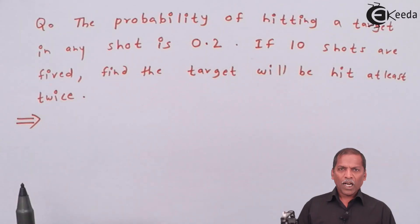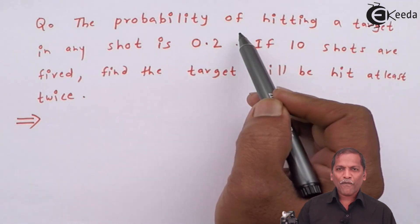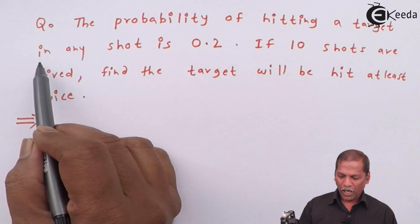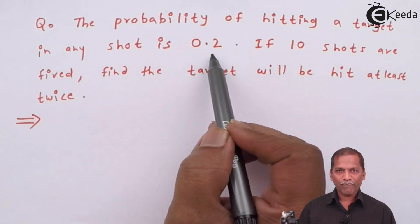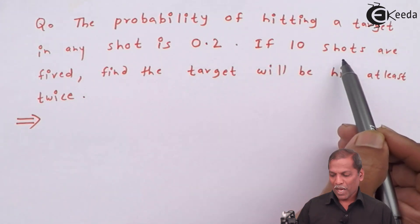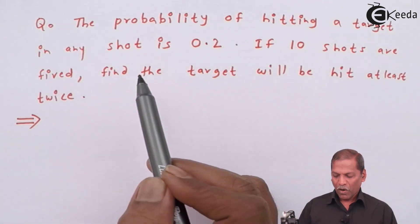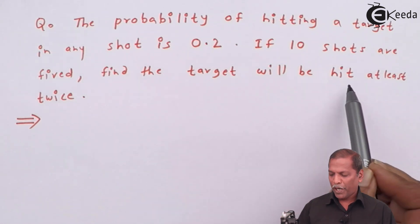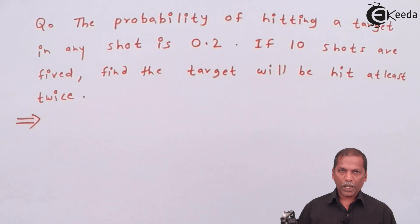The question is: the probability of hitting a target in any shot is 0.2. If 10 shots are fired, find the probability that the target will be hit at least twice.